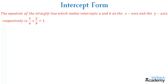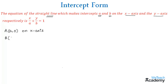The given information is that there is a straight line which cuts off intercept a on the x-axis, so the point A will be (a, 0) on the x-axis. Similarly, it cuts intercept b on the y-axis, so we get the point B as (0, b) on the y-axis.